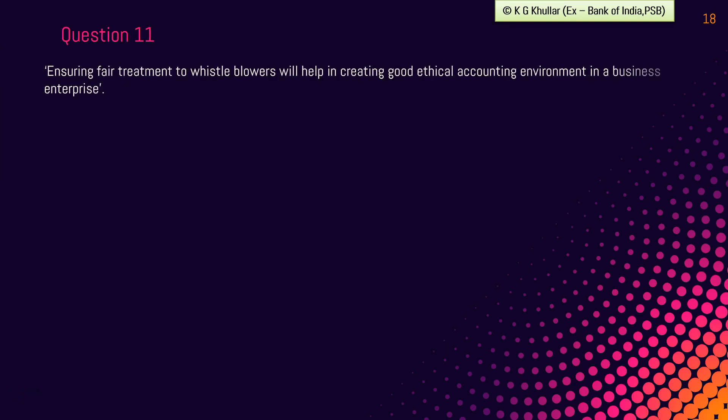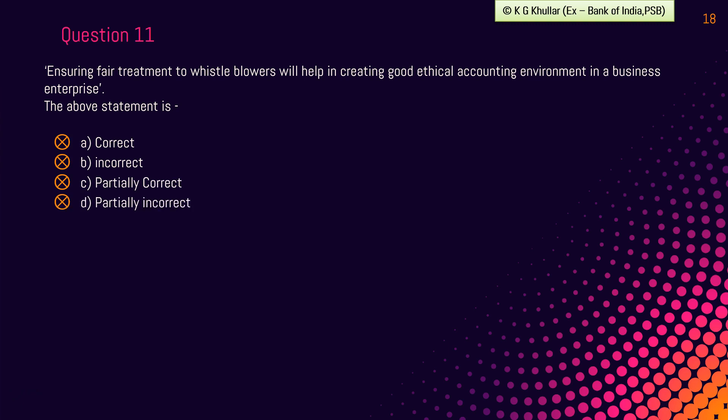Next question: ensuring fair treatment to whistleblowers will help in creating a good ethical accounting environment in a business enterprise. The above statement is — and the options are these. A whistleblower is an employee or person who reports fraud, mismanagement, or unethical practices to the appropriate level of management. Fair treatment and appreciation of whistleblowers is necessary to check frauds and helps in creating a good accounting environment. Thus the statement is correct, so the correct option is option A.